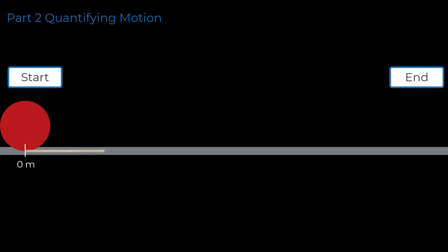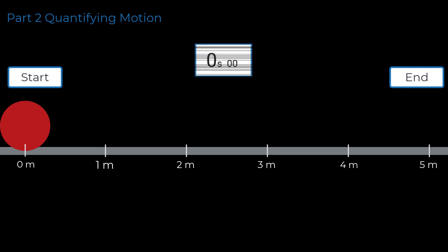First, we will need to use a measuring tool to determine how far the red ball has moved from its starting position to its final position. Here we will use a meter stick because it provides equal intervals of distance to measure. Second, we must determine how much time has passed — to do this we will use a stopwatch. To most accurately determine the motion of the object, we will measure the position of the object every second.